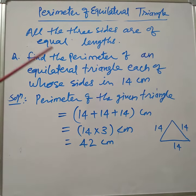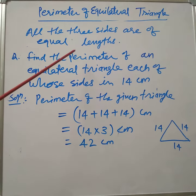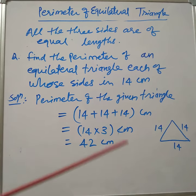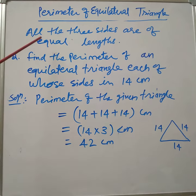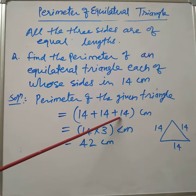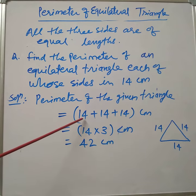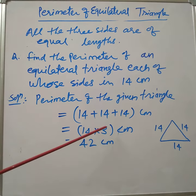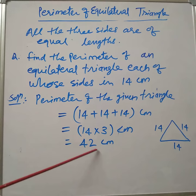To find the perimeter of an equilateral triangle, only one side is given, and we know that all three sides of an equilateral triangle are of equal length. So, we add the side three times, or we multiply the given side by 3. In this way, we can find out the perimeter of the given equilateral triangle.